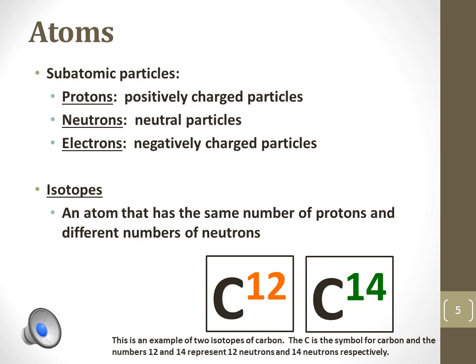Isotopes of the same element, carbon with six protons, for example, differ in their mass because they have a different number of neutrons. Carbon-14 is more massive because it contains two more neutrons than carbon-12, which only has six protons and six neutrons.